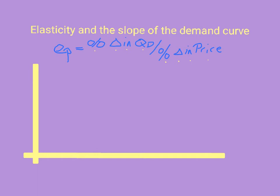Let's graph two demand curves to find out which one has the highest price elasticity of demand — one with a higher slope and one with a lower slope. First, we'll graph a demand curve that is relatively steep — we'll call that demand curve 1. Now let's graph a demand curve that is relatively flat — we'll call this demand curve 2.